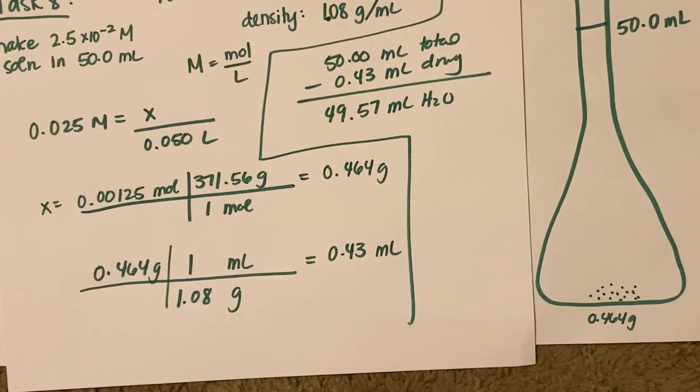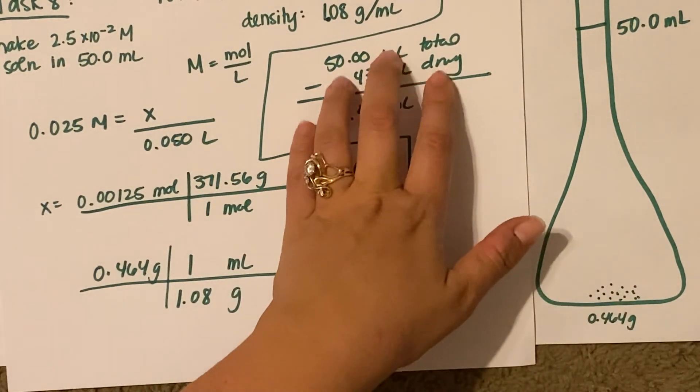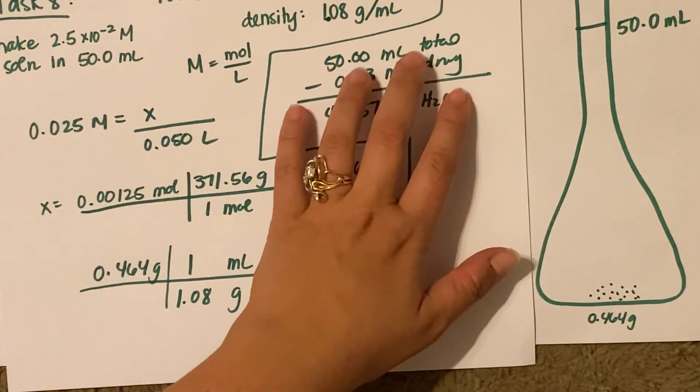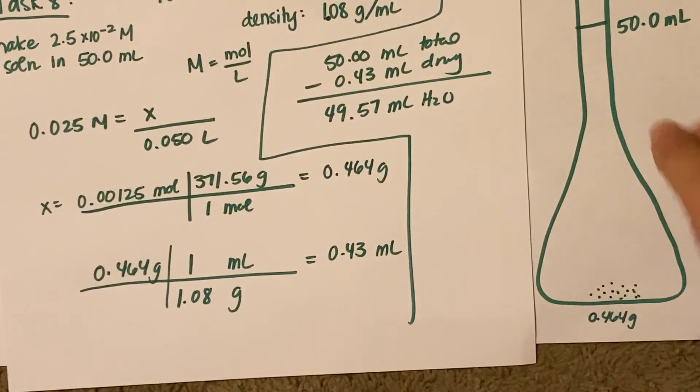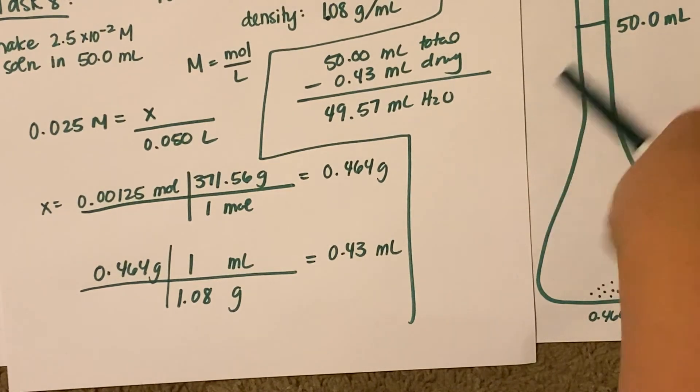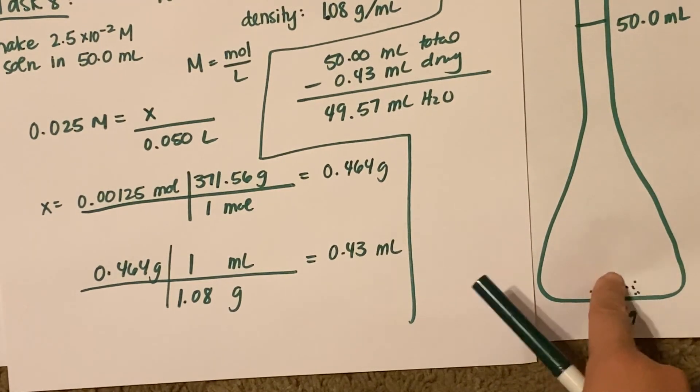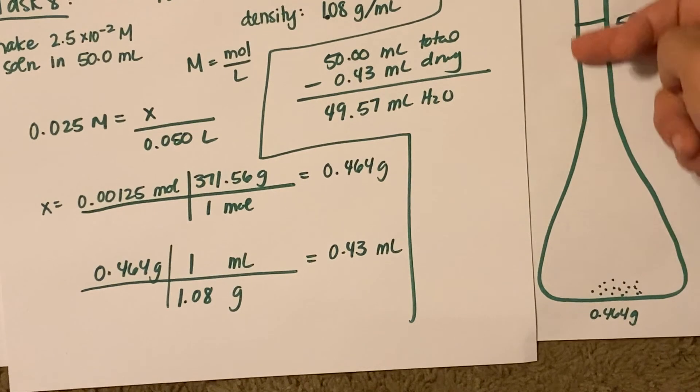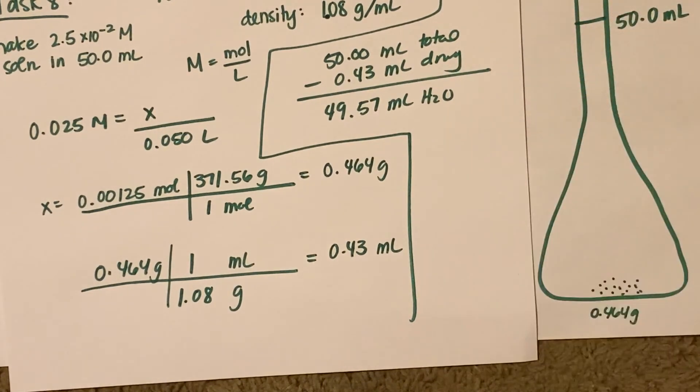In real life, you wouldn't need to calculate this out in the lab. That's unnecessary because you would just add in your 0.464 grams, add a little bit of water, swirl around your volumetric flask to let it dissolve, and then just add water until it hits the line. Then you're done.